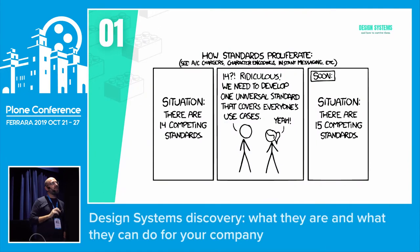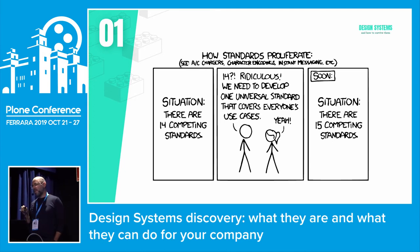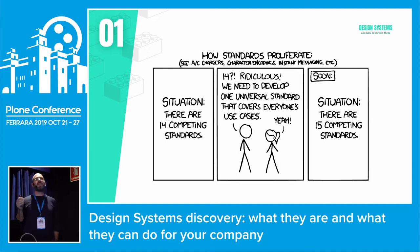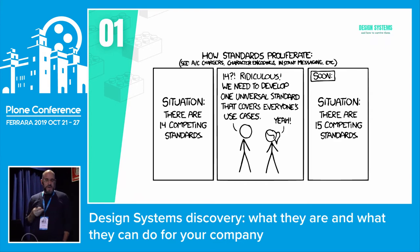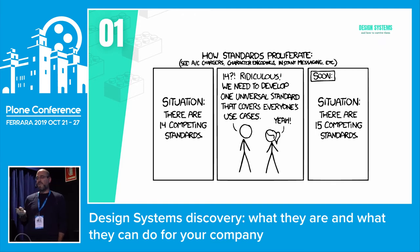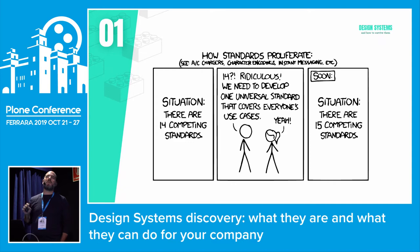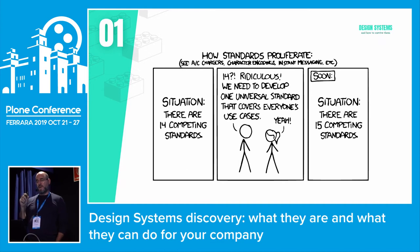What is a design system? Let's understand if you've ever found yourself in this situation. You've got 14 competing standards for the drop-down, for the button, for whatever it is. You meet with the team and understand that 14 is ridiculous. So you work hard, and then what happens? You've got 15 competing standards. This is how standards proliferate, and this is where design systems come in.